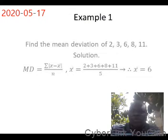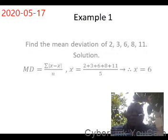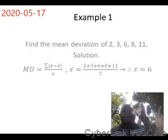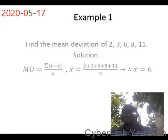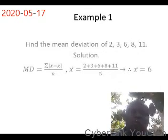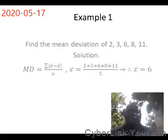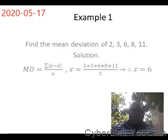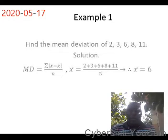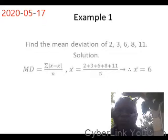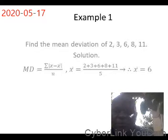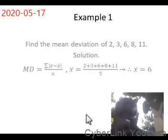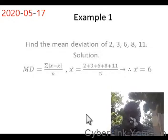Let us take an example. Find the mean deviation of 2, 3, 6, 8, and 11. First, you find the mean — because without finding the mean you cannot know the deviation from it. In finding the mean: 2 + 3 + 6 + 8 + 11 over the total frequency. Dividing by the frequency of 5, we get 6. So 6 is our mean.